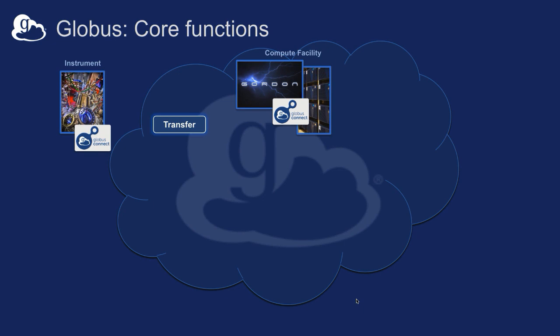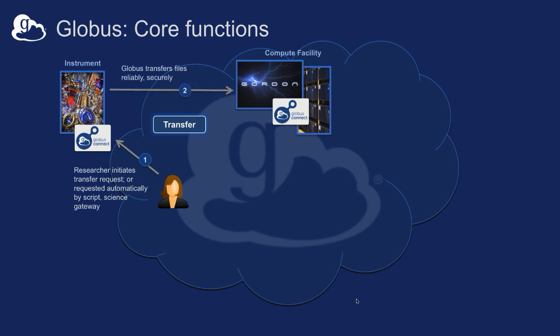The core functions of Globus: we started out basically as a file transfer tool. A researcher can say, move some data from a storage system somewhere — it might even be an instrument in many cases — to some other machine. That request goes into Globus, and the service takes over. The researcher can shut their laptop down and the data moves between those two systems, with Globus monitoring things and recovering from any transient errors. It's really a fire-and-forget mentality, especially for larger data sets where it's critical to ensure things progress as they should.